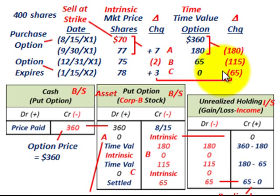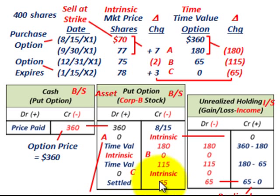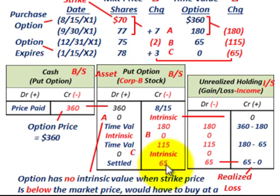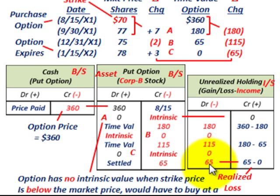On the last date, the value moved from $65 down to $0 at the settlement date when the option expires. We reduce the put option account for $65, and that goes as an unrealized holding loss on income of $65. The losses from prior periods were accounted for in those periods. Looking at just the settlement date — period X2 — we would recognize a realized loss of $65.